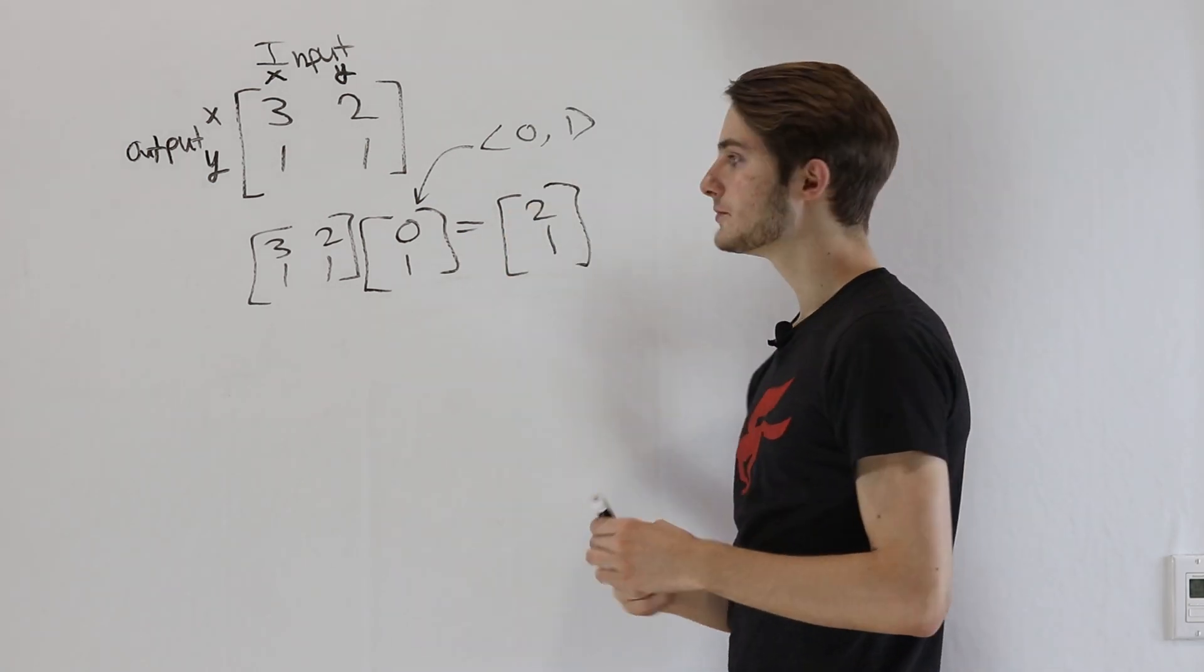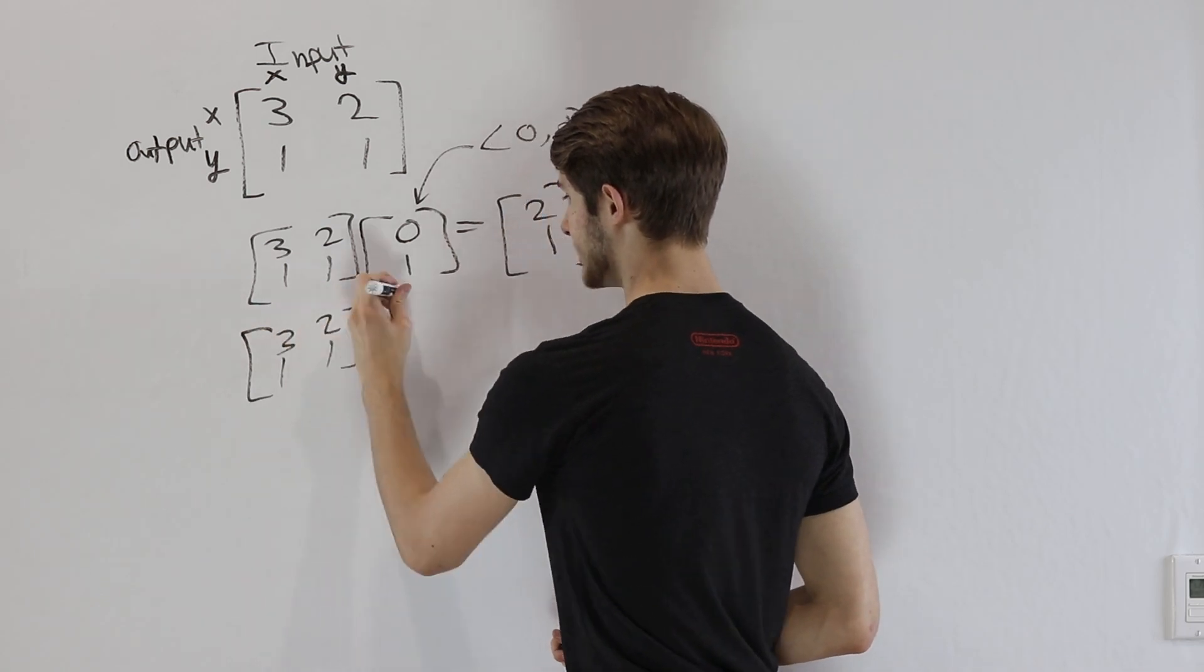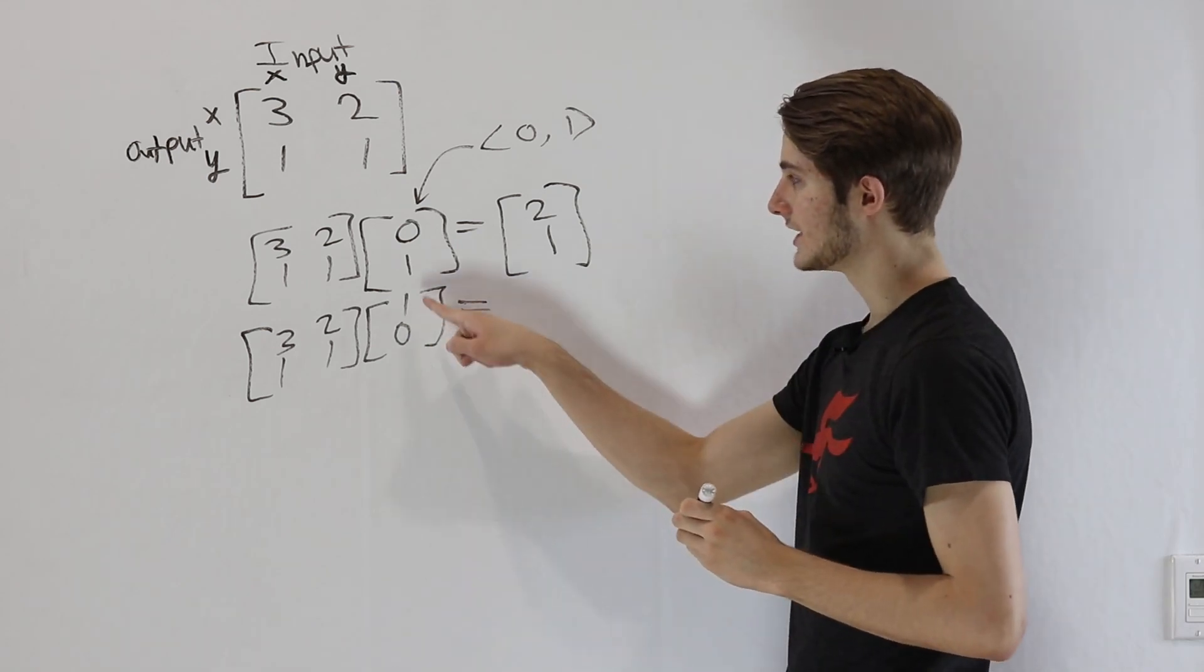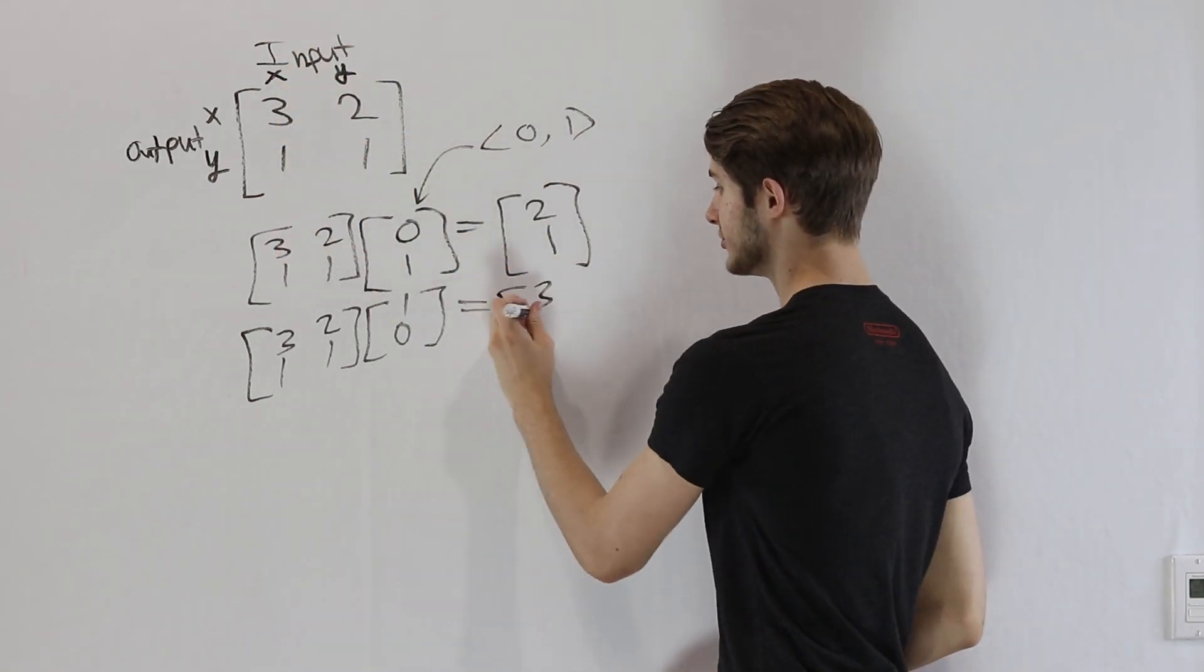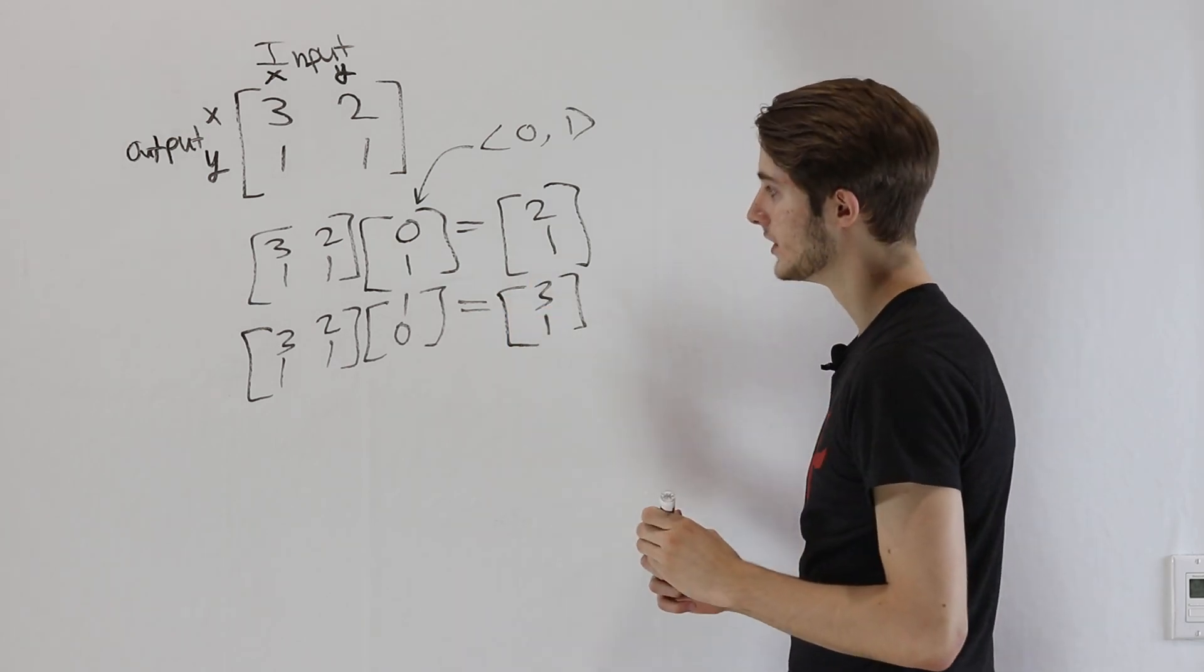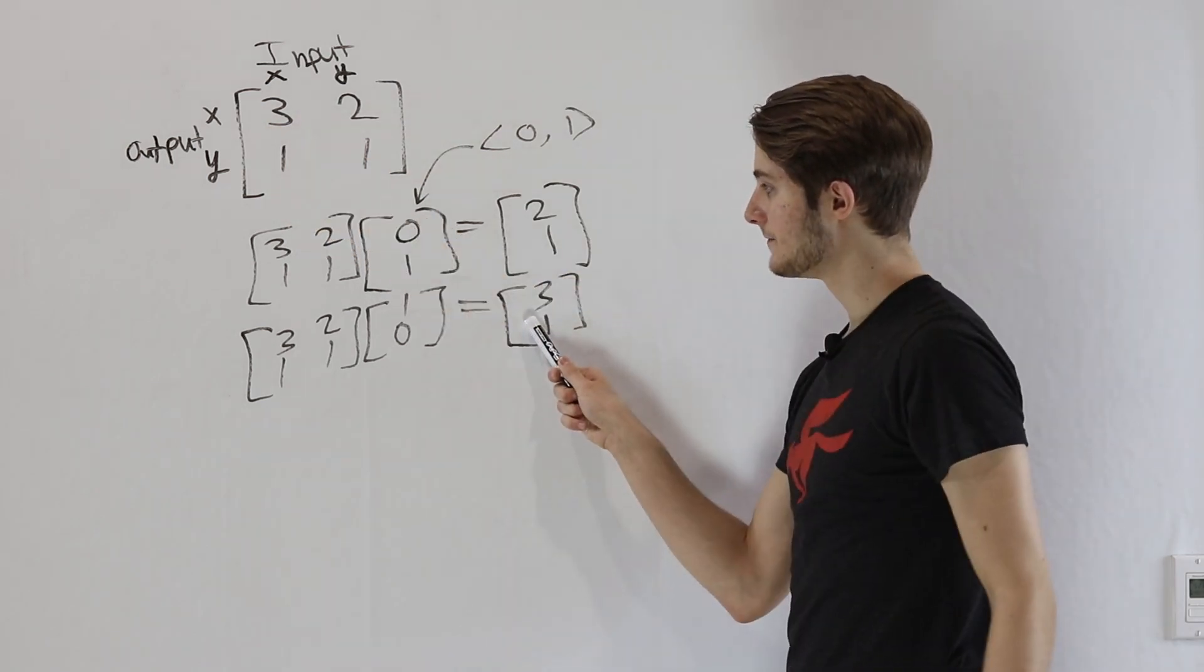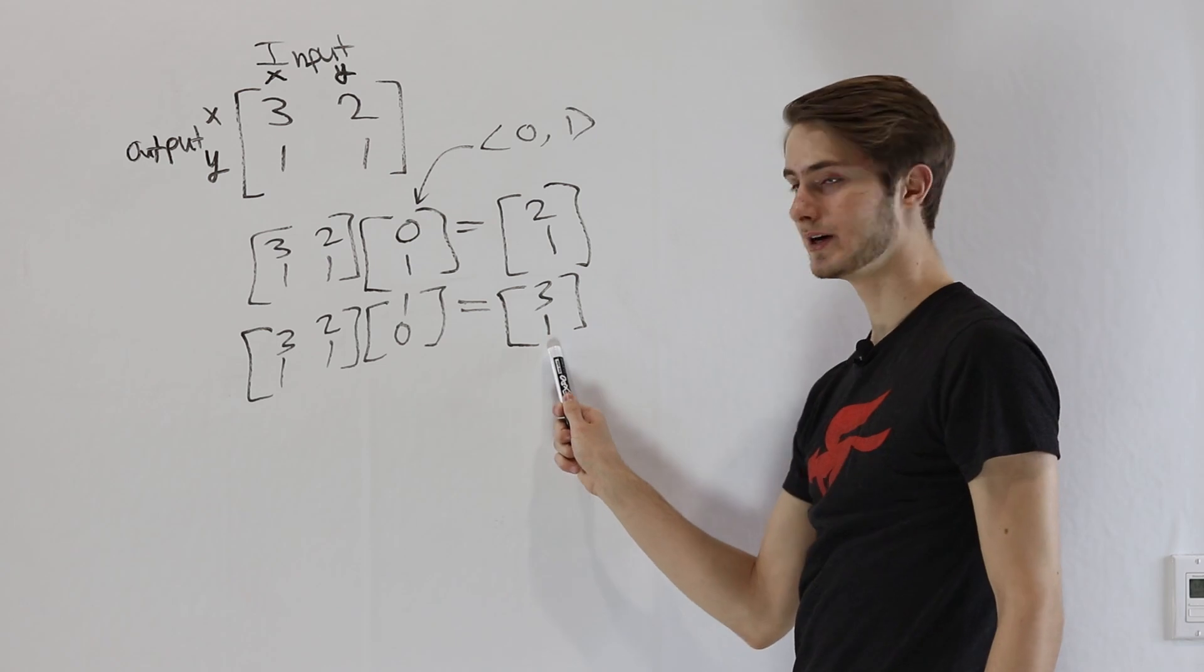If we apply the same process to the x vector, so we take [3, 2, 1, 1], and multiply it by the vector (1, 0), in this case we're only going to be having an x input. So we just look at this first column, and the output is going to be (3, 1). Notice our x input of 1 got mapped to an x output of 3 right here, and the x input of 1 got mapped to a y output of 1.